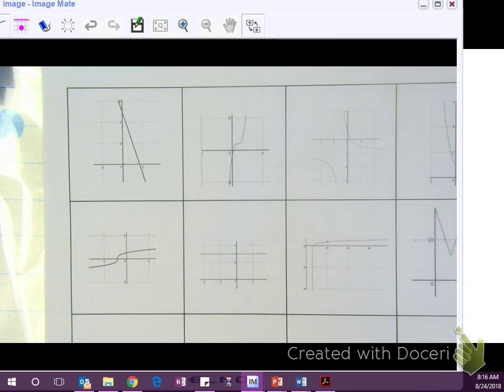For this first graph, what's the parent function for this graph? Linear. So this should be on the row for your linear one. And what is the domain and range for this?